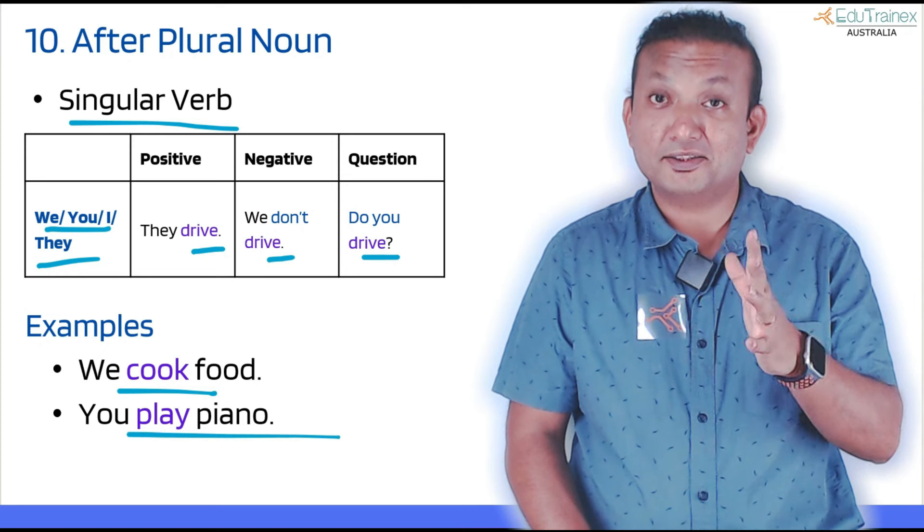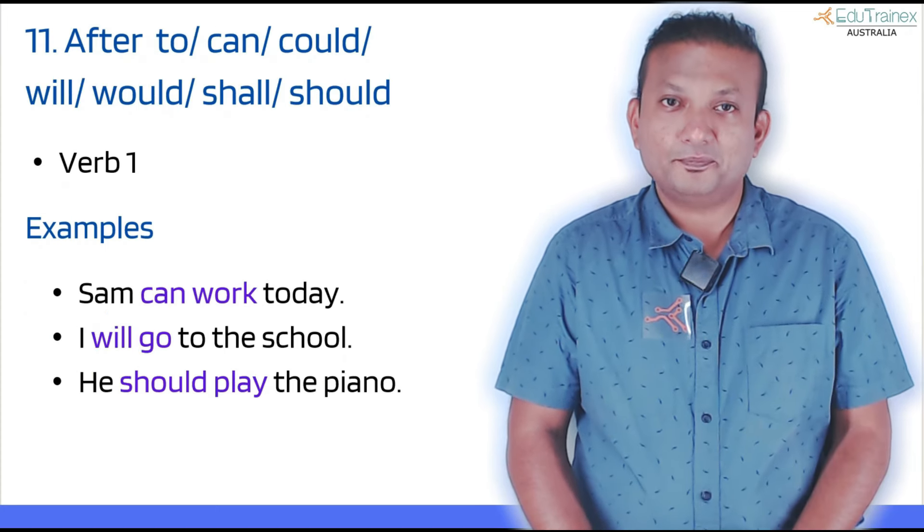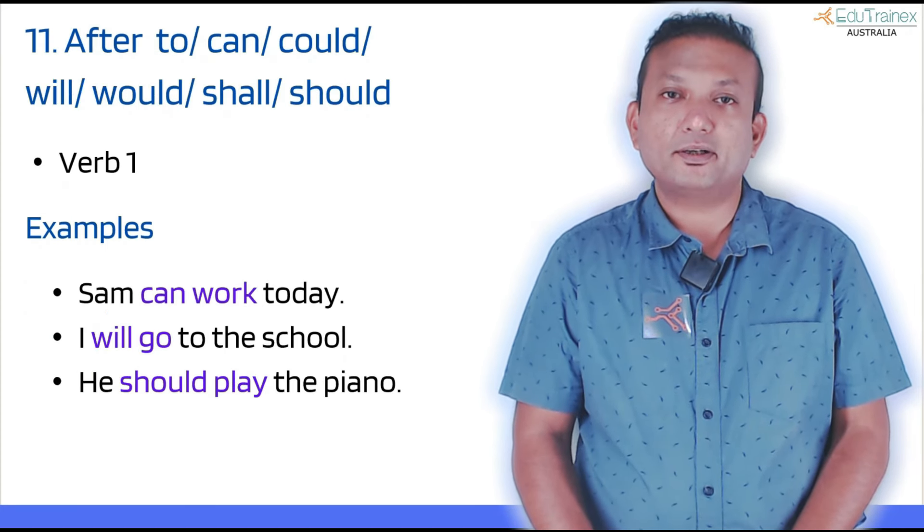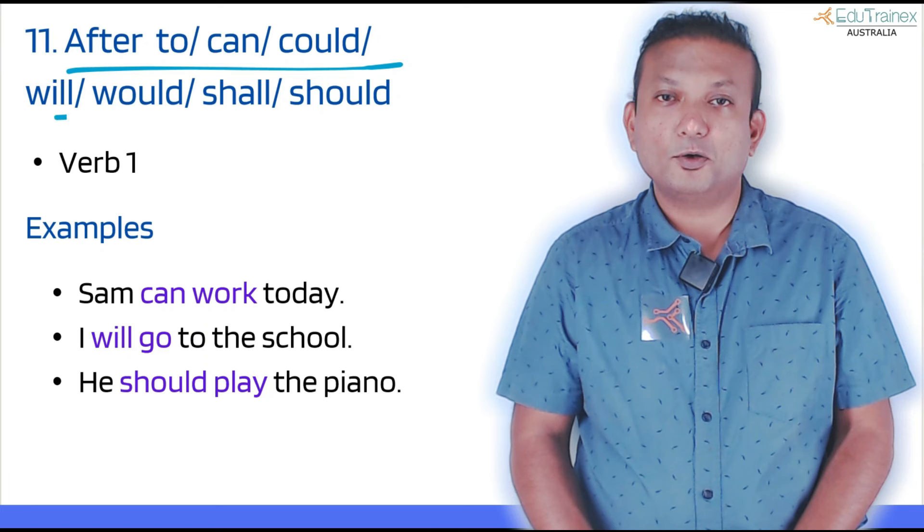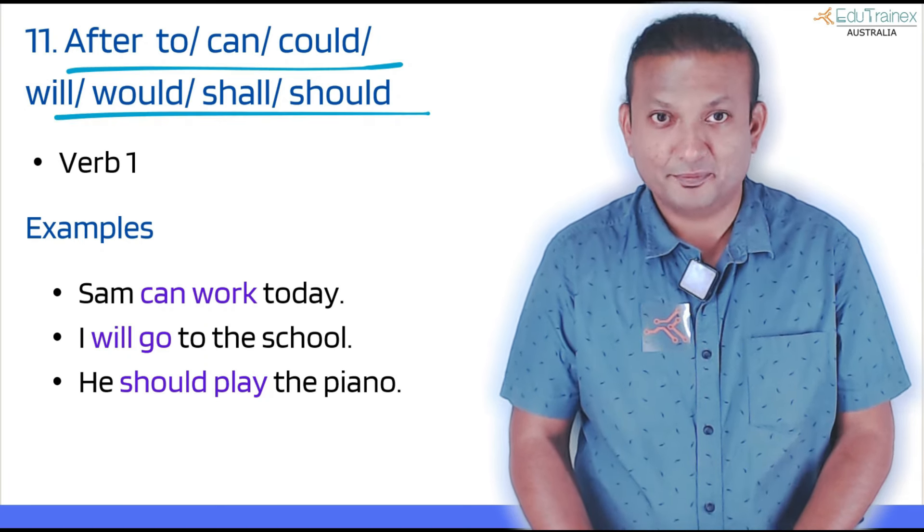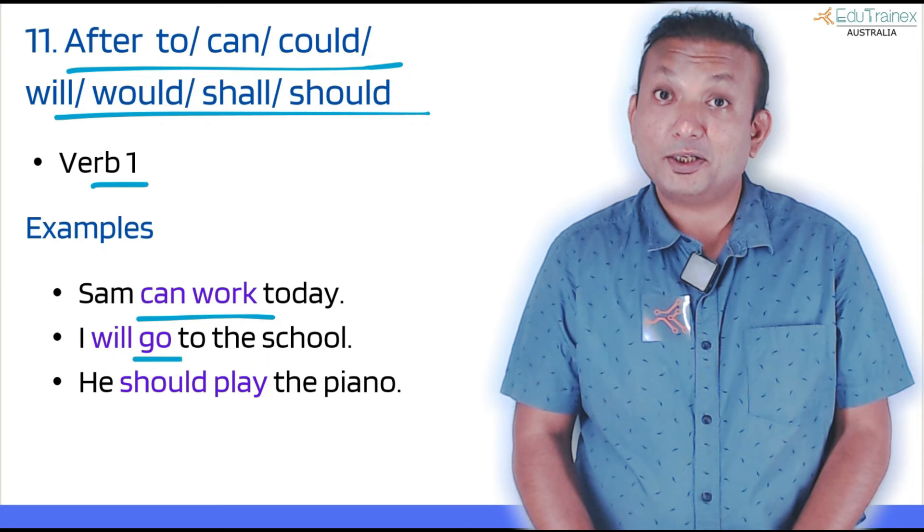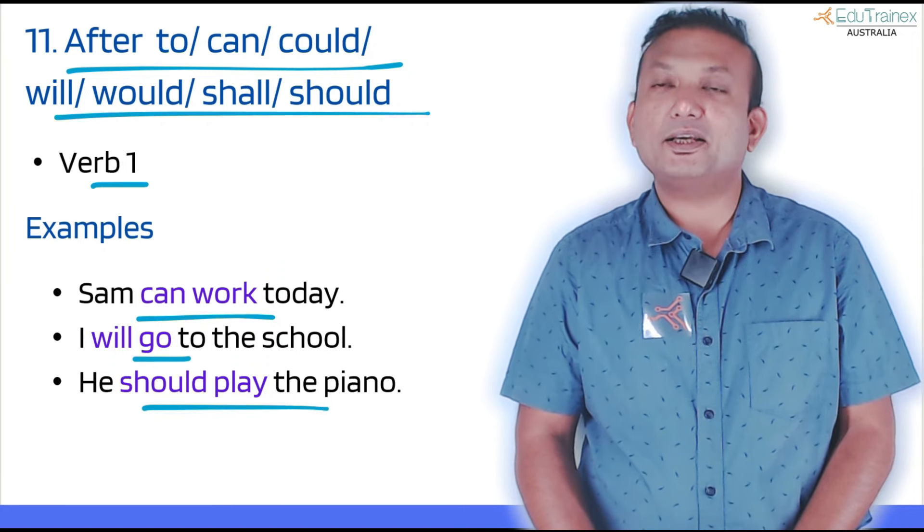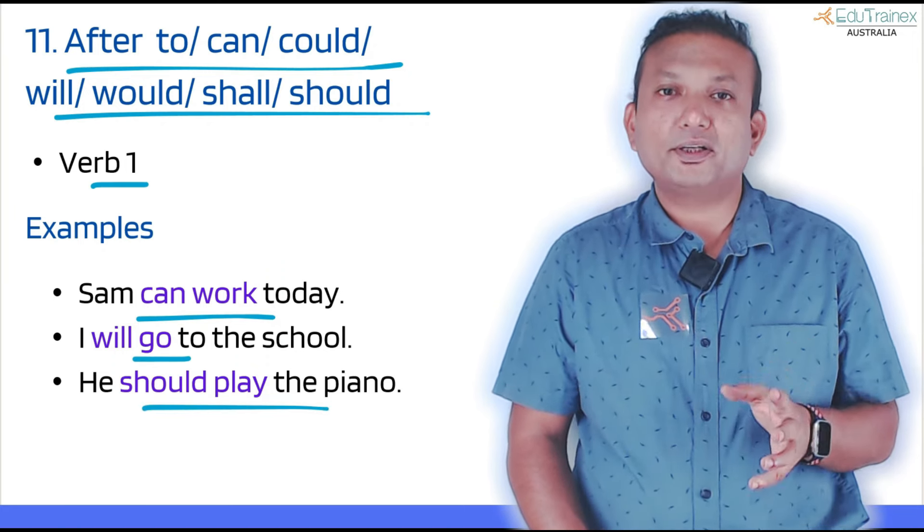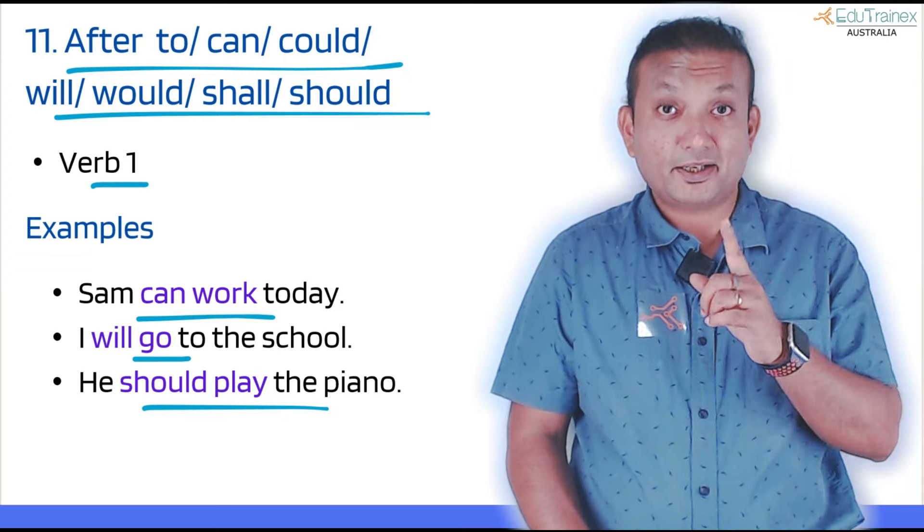The next one is what comes after to, can, could, will, would, shall, should. What comes? Verb one. See the examples here: 'Sam can work today,' 'I will go to the school,' 'he should play the piano.' See how verb one is coming after these words. Again, a very useful tip in the exam.